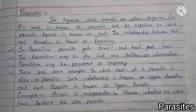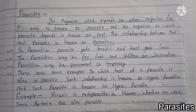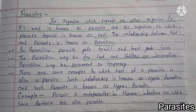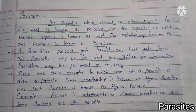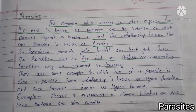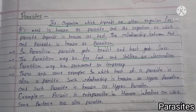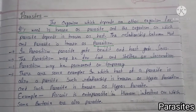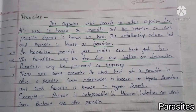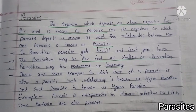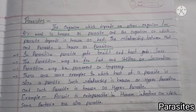Today we will discuss about parasites. The organism which depends on another organism for its needs is known as a parasite. The organism on which the parasite depends is known as the host. The relationship between host and parasite is known as parasitism. In parasitism, the parasite gets benefit and the host gets loss.